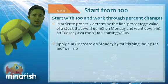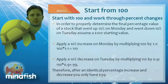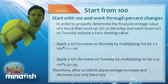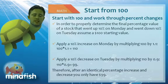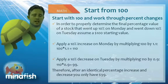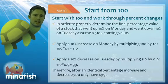Now apply a 10% decrease. We can multiply 110 by 0.1 and subtract 11, or multiply by 0.9, understanding that we have 90% left. 110 times 0.9 yields 99. So even though we went up 10% one day and down 10% the other day, we're actually down to $99, or 99% of our original value.